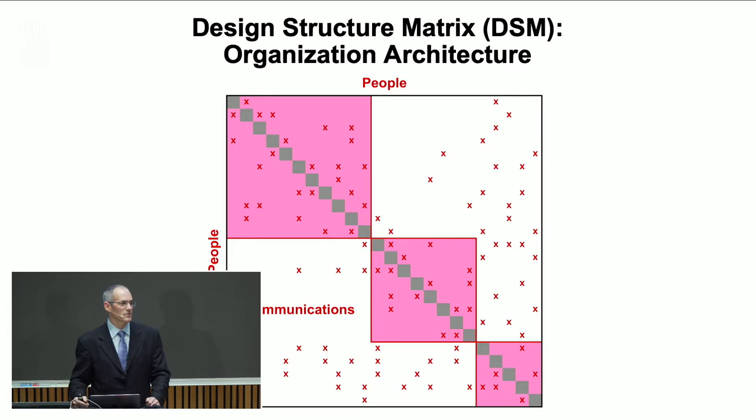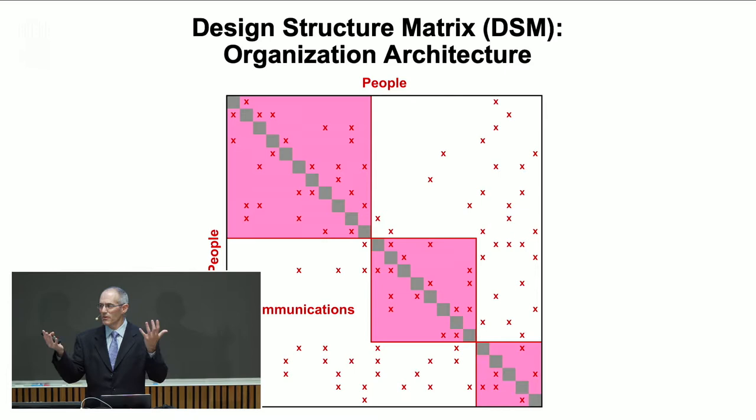In the third domain — the organization domain — we can do a similar thing. We decompose the organization into people, teams, work groups, or departments, and then look at the network of connections across those elements. How do people work together? To what extent do they communicate or work closely together or not?